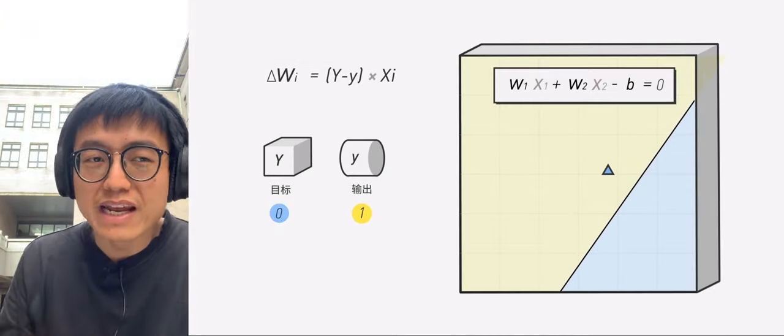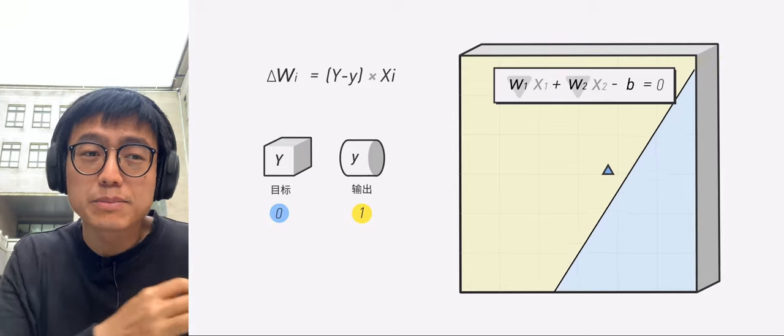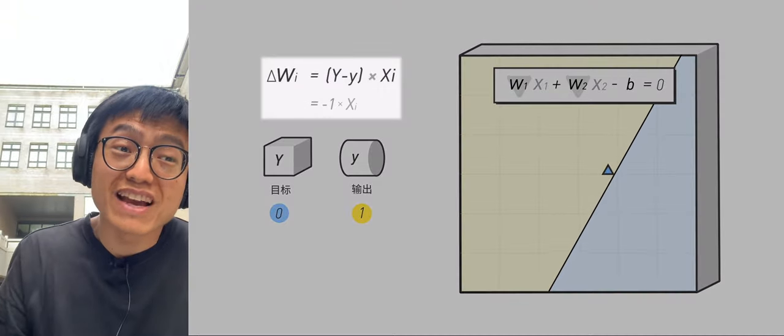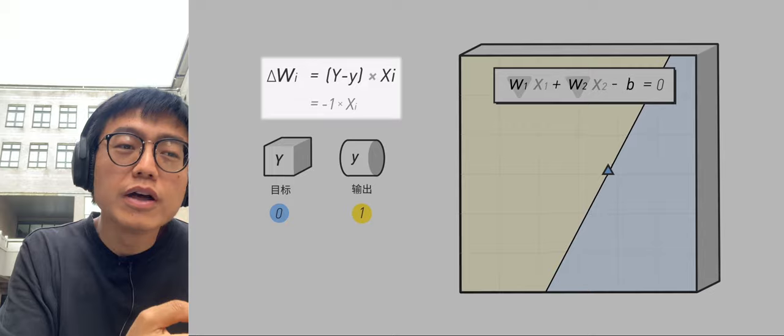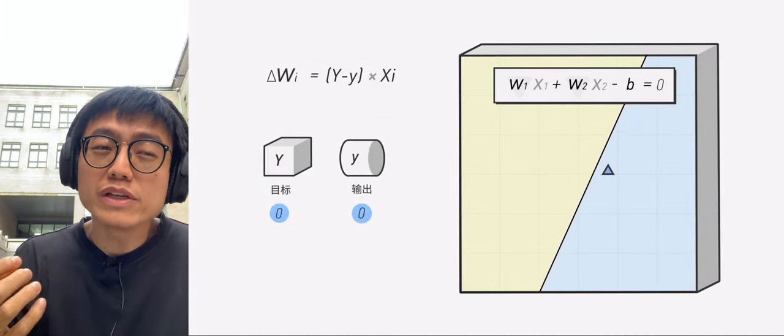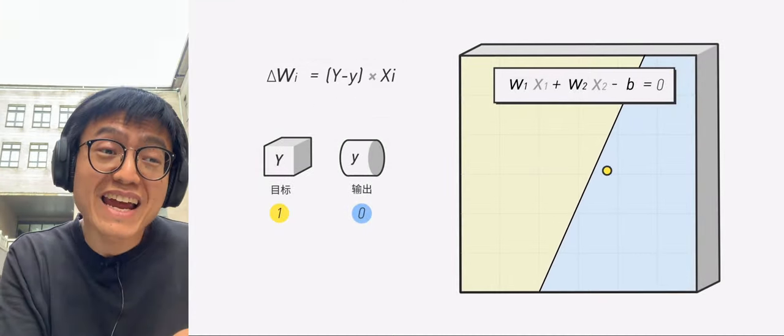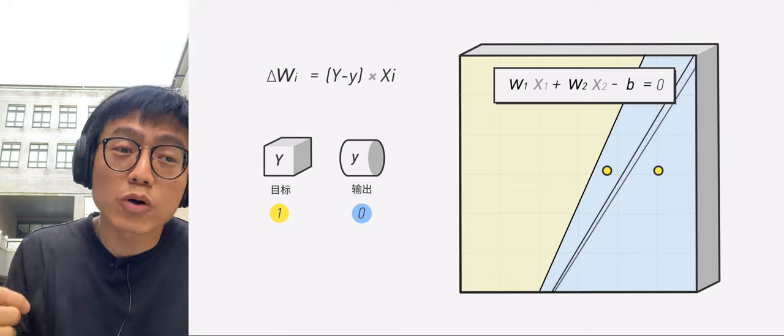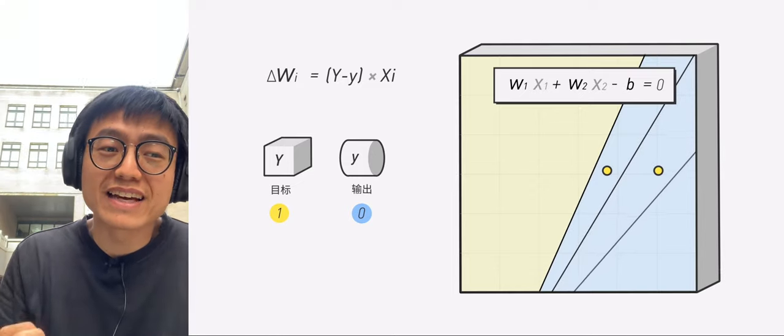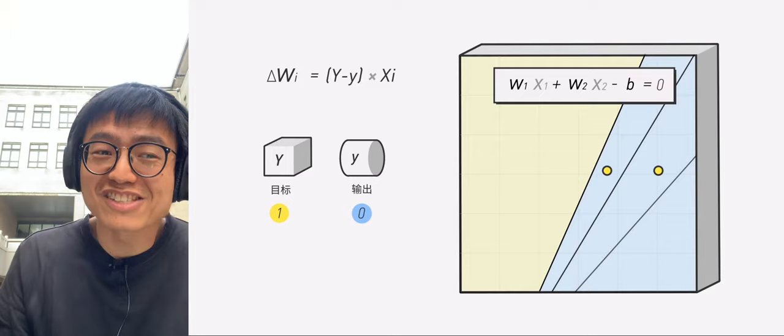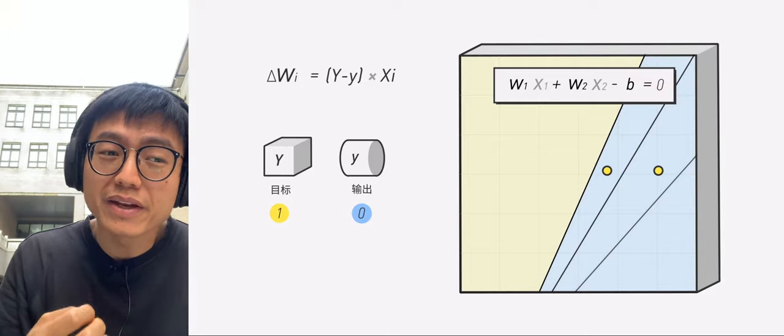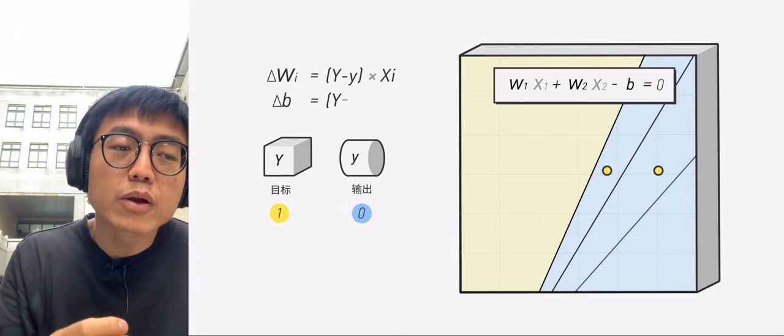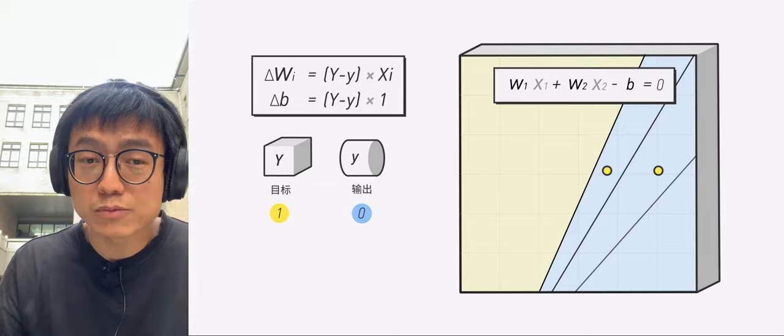On the other hand, if it is negative 1, it means that the previous W is too high. Then we need to lower it so that Fx is less than B. So the delta W must be negative at this time. The reason we want to multiply the Xi is that the greater the X at this point, the greater the impact on the entire Fx, and the adjustment of W should also be larger. In the real case, B will also be adjusted according to the same rule. Delta B equals uppercase Y minus lowercase y times 1.